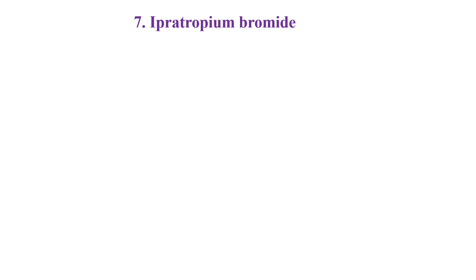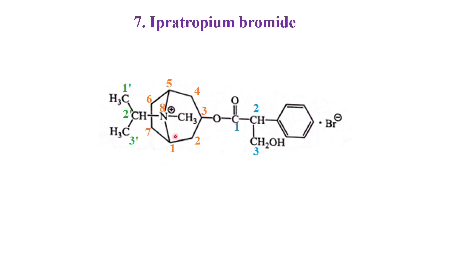Now we are going to see the synthesis of Ipratropium bromide. First we will see the structure of Ipratropium bromide. The parent chain is having 3 carbons, that is why propyl, and having the functional group ester COO, that is why it is called as propanoate.